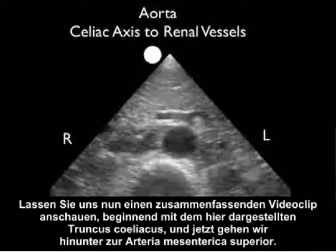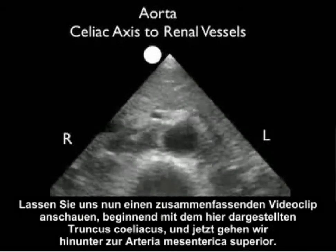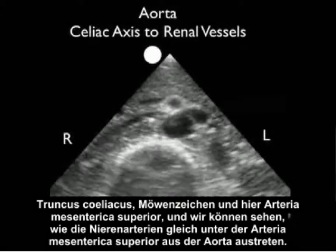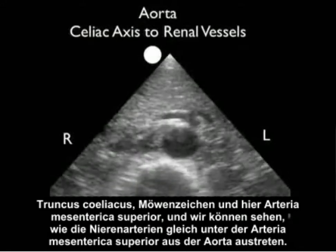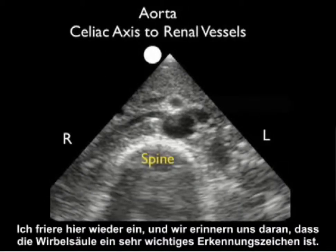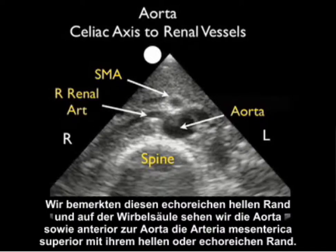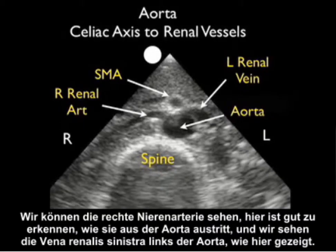Let's look at a video clip that puts it all together, beginning with the celiac axis and moving on to the superior mesenteric artery — celiac, seagull, and there, the superior mesenteric artery. We can actually see the renal arteries coming off the aorta, just below the superior mesenteric artery. Freezing here, we remember that the spine is our very important landmark with that hyperechoic bright rim. On top of the spine we see the aorta, and anterior to the aorta the superior mesenteric artery with its hyperechoic rim. We can also see the right renal artery coming off the aorta, and the left renal vein to the left of the aorta.